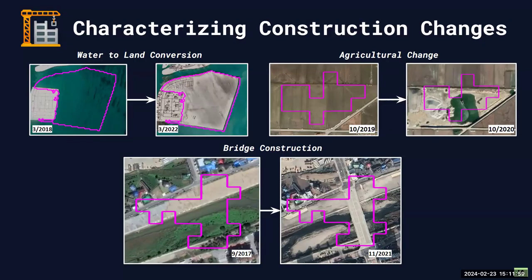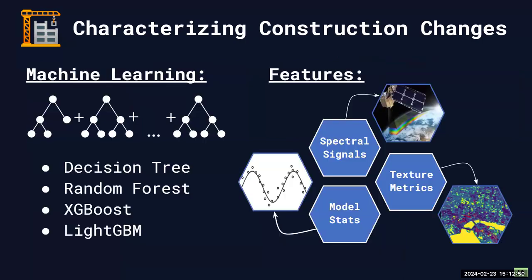The first challenge is being able to characterize construction changes from other types of land cover change. RoboBayes is built as a general land cover change detection algorithm — it detects everything. In the upper left you see a water-to-land conversion in Bahrain; upper right shows an agricultural irrigation event. While these are real changes, they're not the type the government was interested in. The center example is a bridge construction in South Korea — this is the type of heavy construction we want to target. The question became: how can we retain heavy construction detections while filtering out other land cover changes?